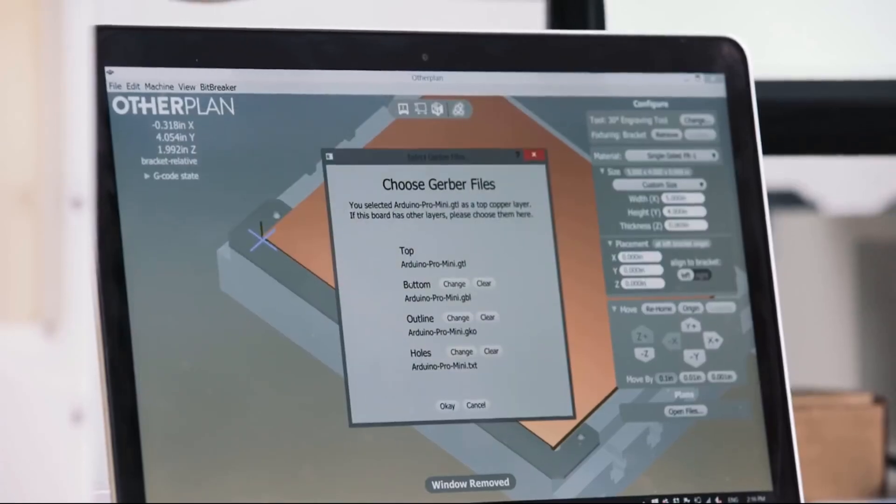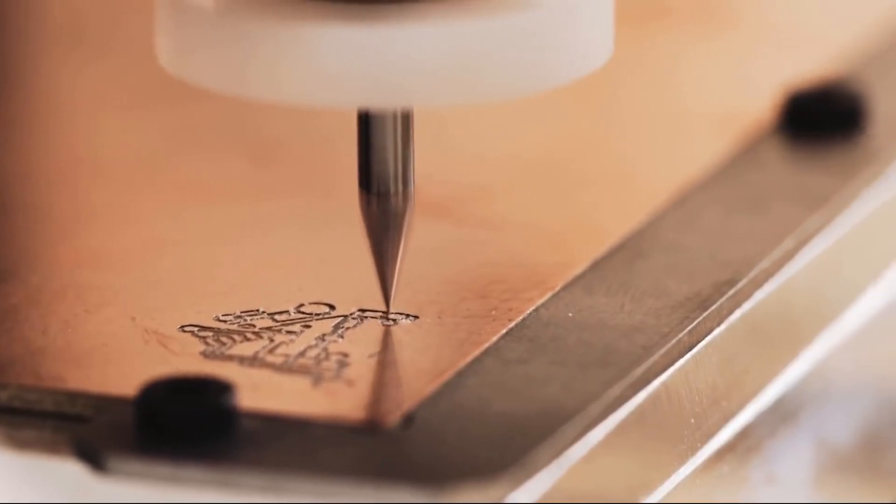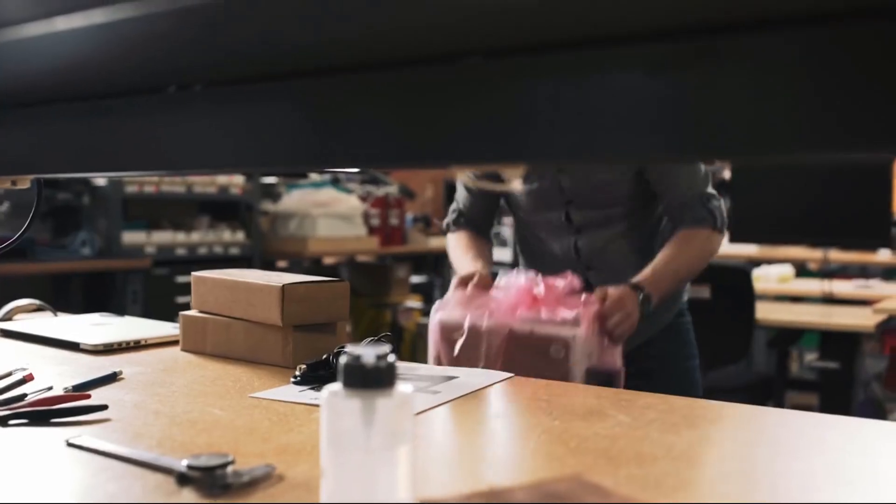The Other Mill Pro mills directly from Gerber files, achieves 6mm trace and space, and effortlessly handles double-sided PCBs. Why spend half your design time waiting on the board house?